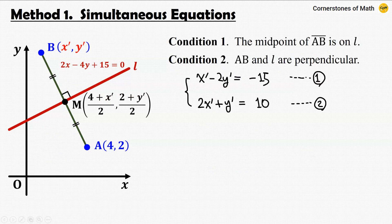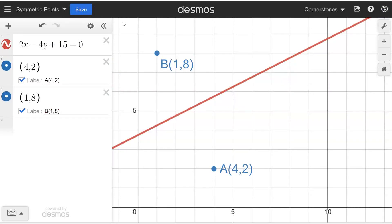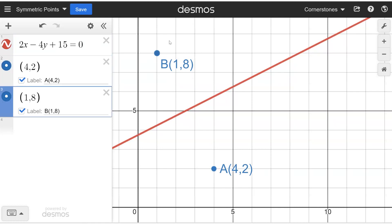If we solve these two equations simultaneously, we obtain point B. Solving the system of linear equations gives x-prime equals 1 and y-prime equals 8. Therefore, point B is (1, 8). Here's the plot of the line and points using Desmos graphing calculator. The red line is the given line L, here is point A, and here is point B. As you can see, they are perfectly symmetric with respect to the red line.